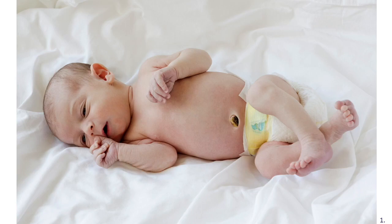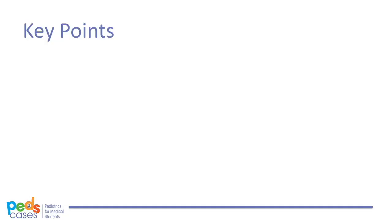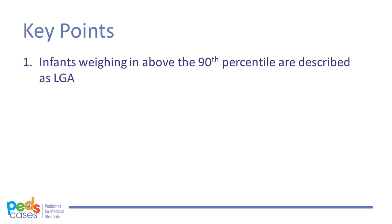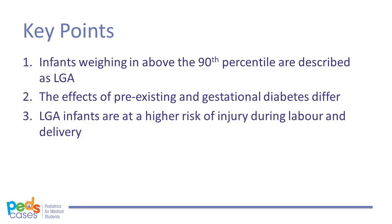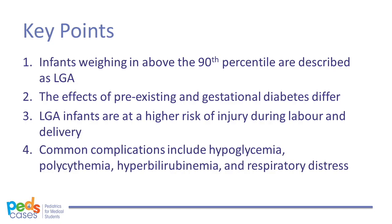Before we conclude, let's go over some key points. Infants born weighing above the 90th percentile are described as large for gestational age and are often born to mothers with GDM. The effects of pre-existing and gestational diabetes on a growing fetus differ: infants of women with pre-existing diabetes are more likely to have congenital anomalies, whereas infants of women with GDM are more likely to be LGA. LGA infants are at higher risk of birth injury during labor and delivery, most commonly a brachial plexus injury or Erb's palsy. Common neonatal complications of maternal diabetes include hypoglycemia, polycythemia, hyperbilirubinemia, and respiratory distress.